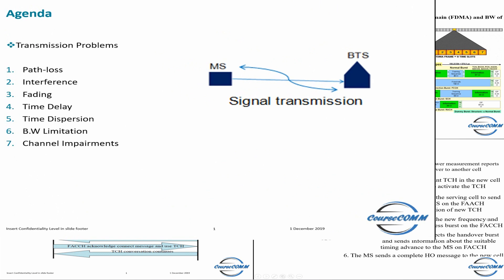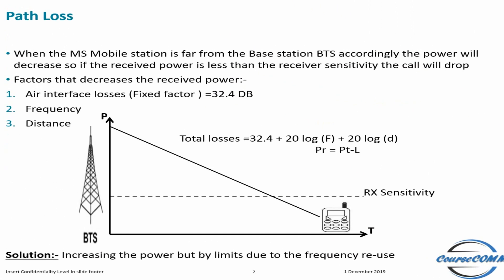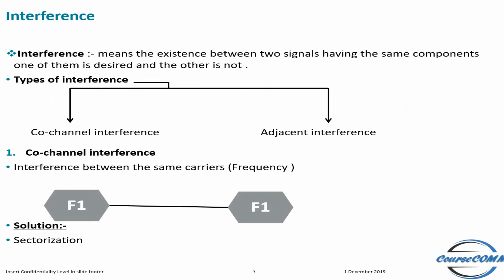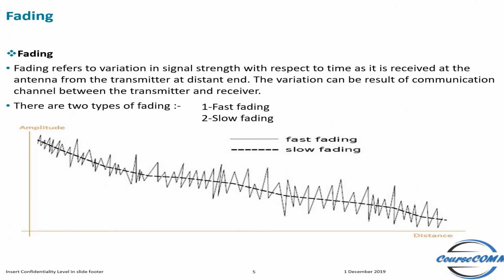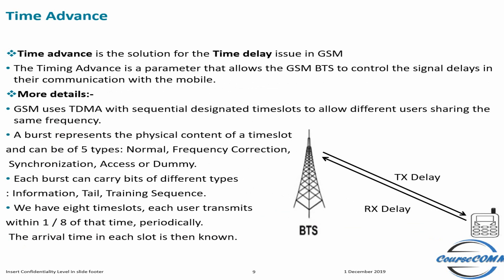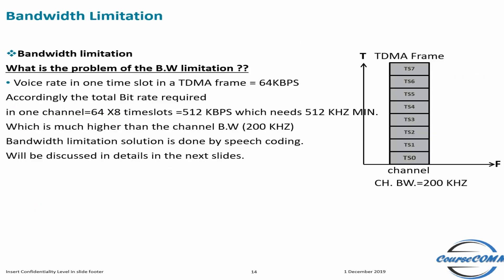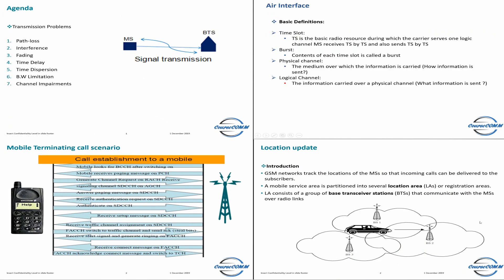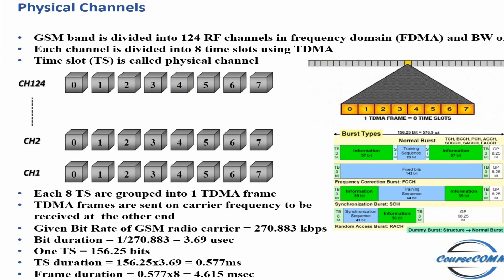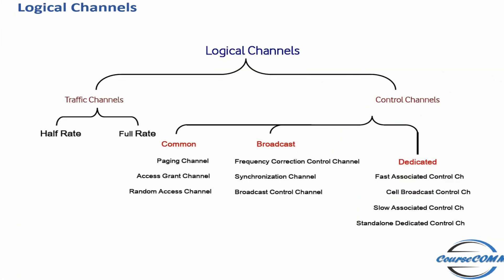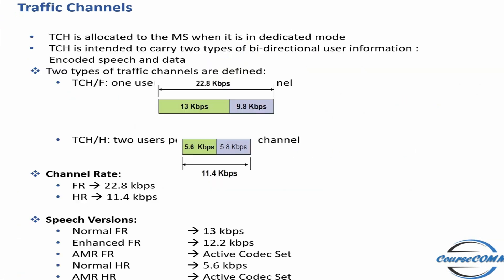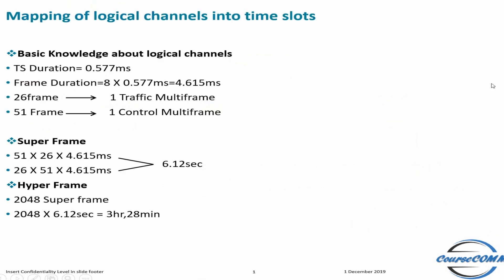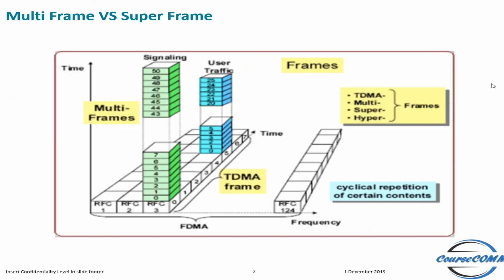In the ninth chapter, we explain all of the transmission problems in GSM. In the tenth chapter, we explain the types of air interface channels, including the logical and traffic channels. After that, we learn how to map these logical and traffic channels into time slots.